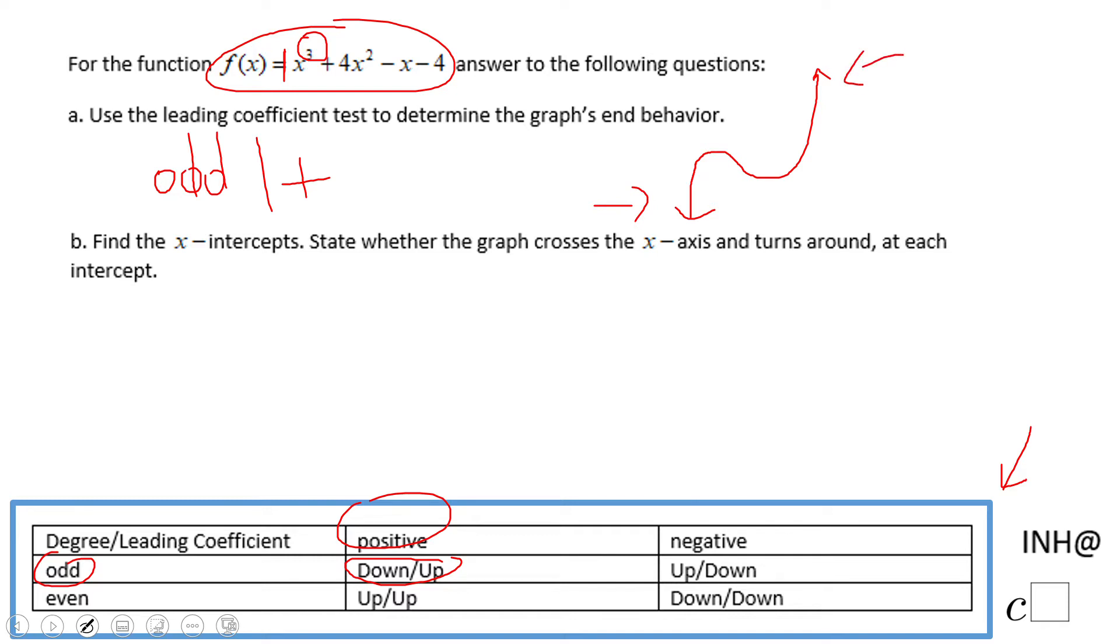Okay, now we can go to point B where we need to find the intercepts of this polynomial function. How do we do that? We're going to set this polynomial equal to 0.